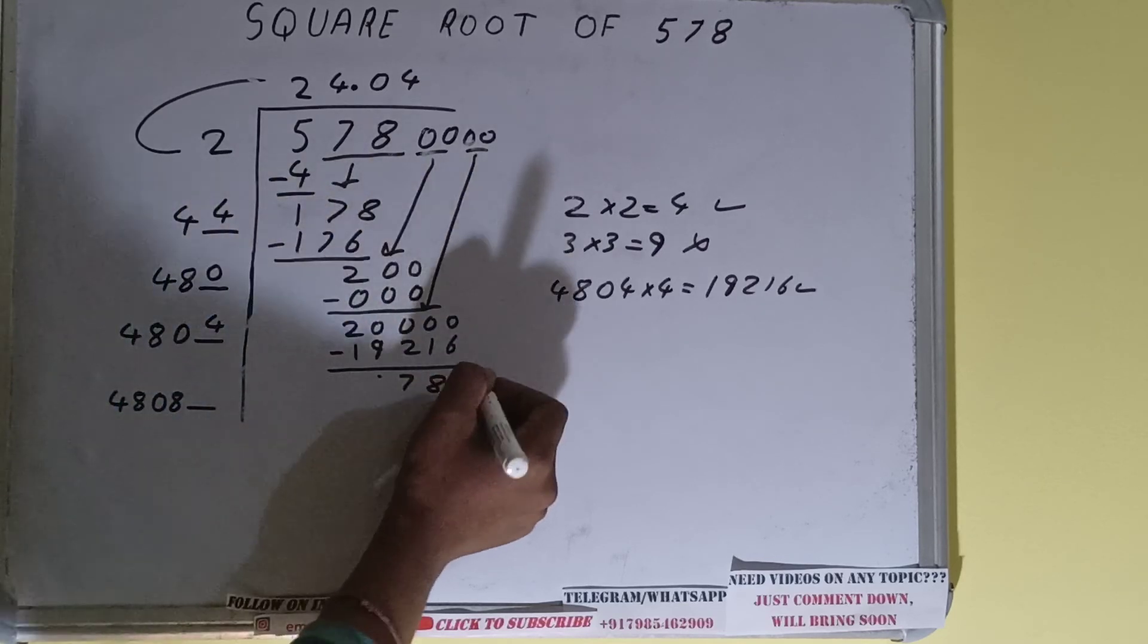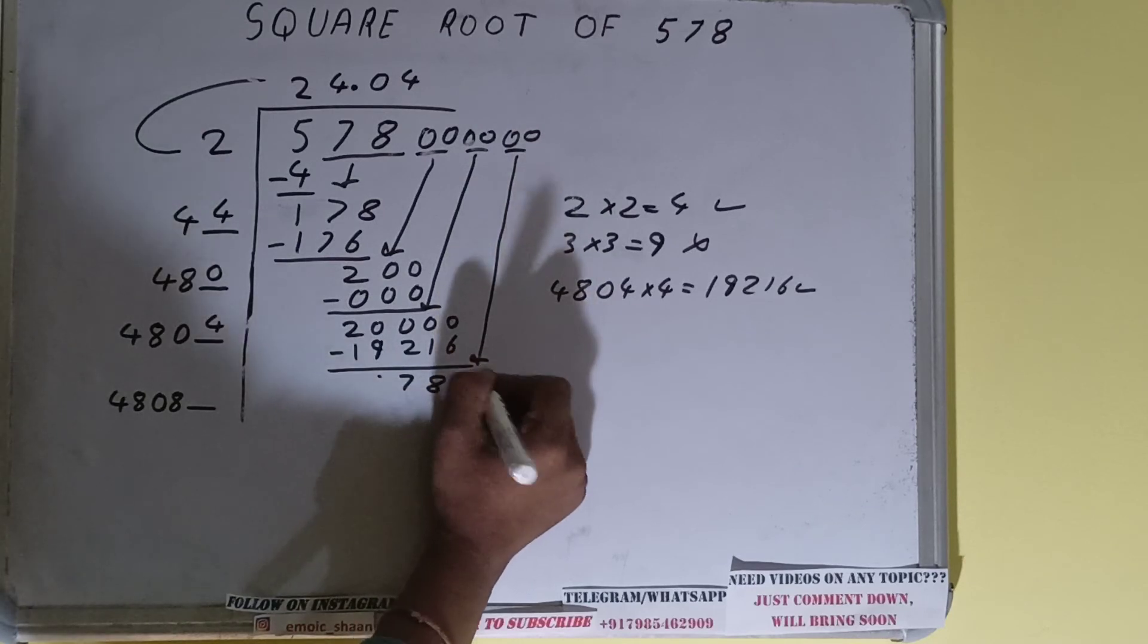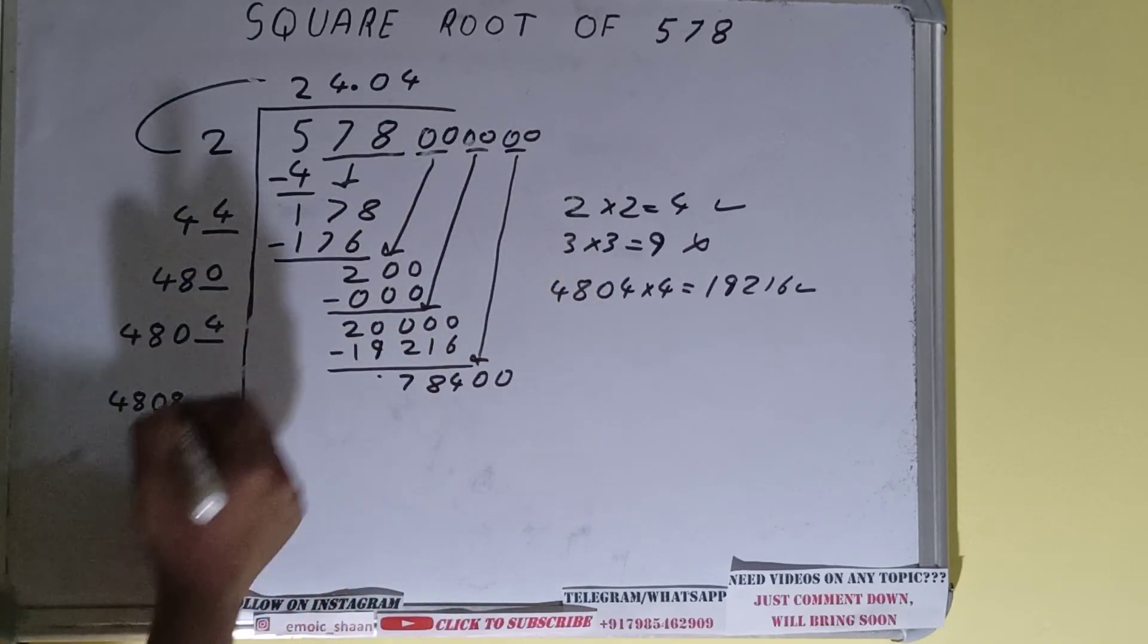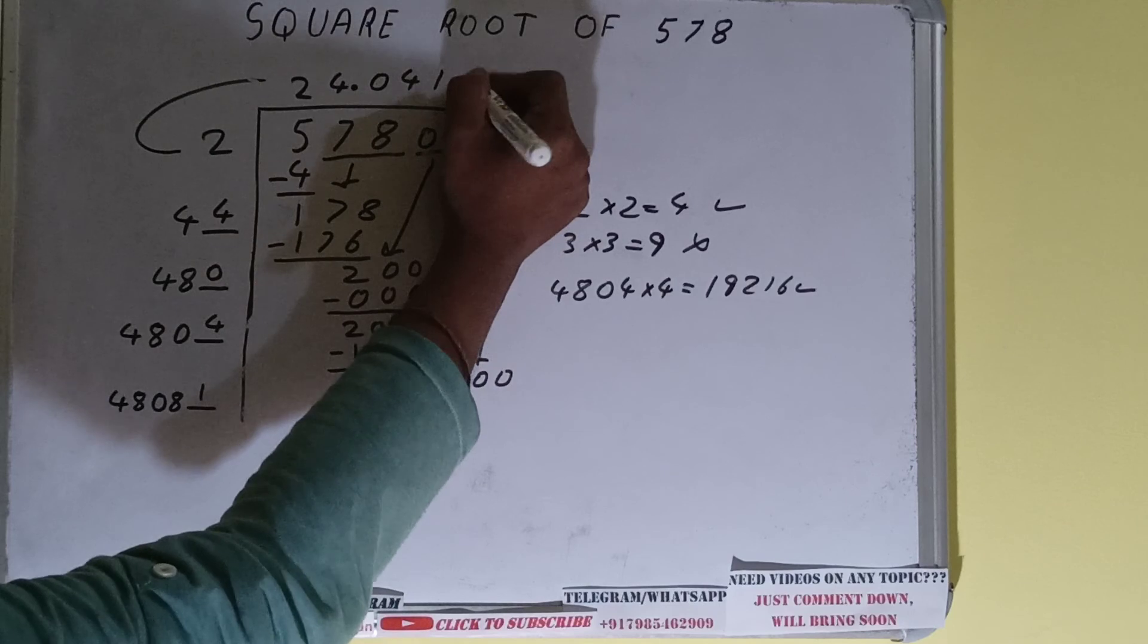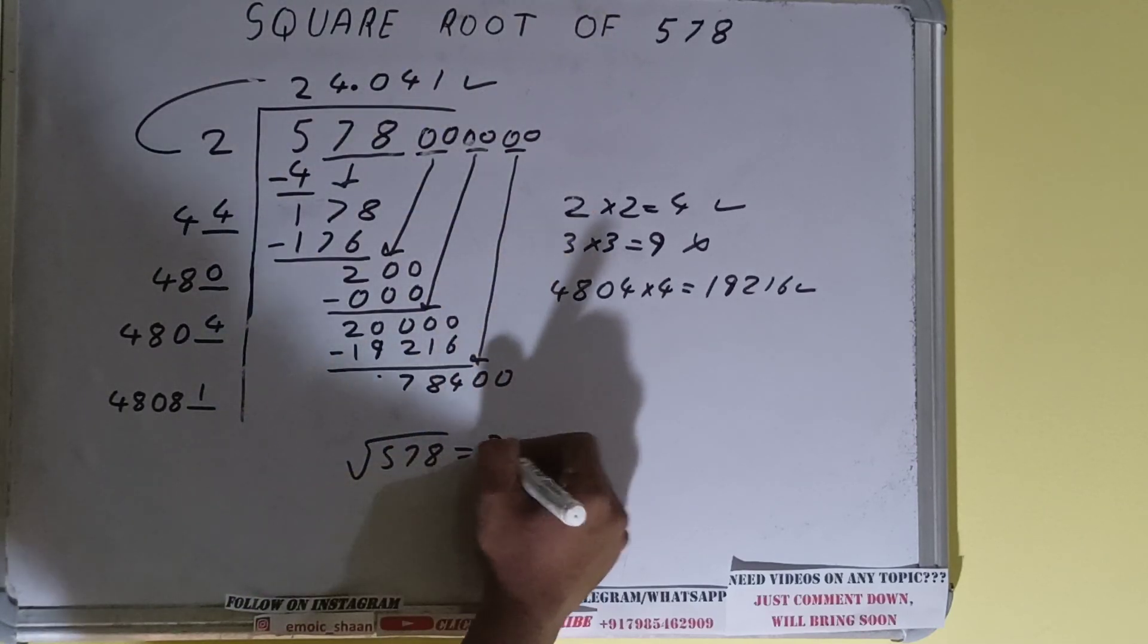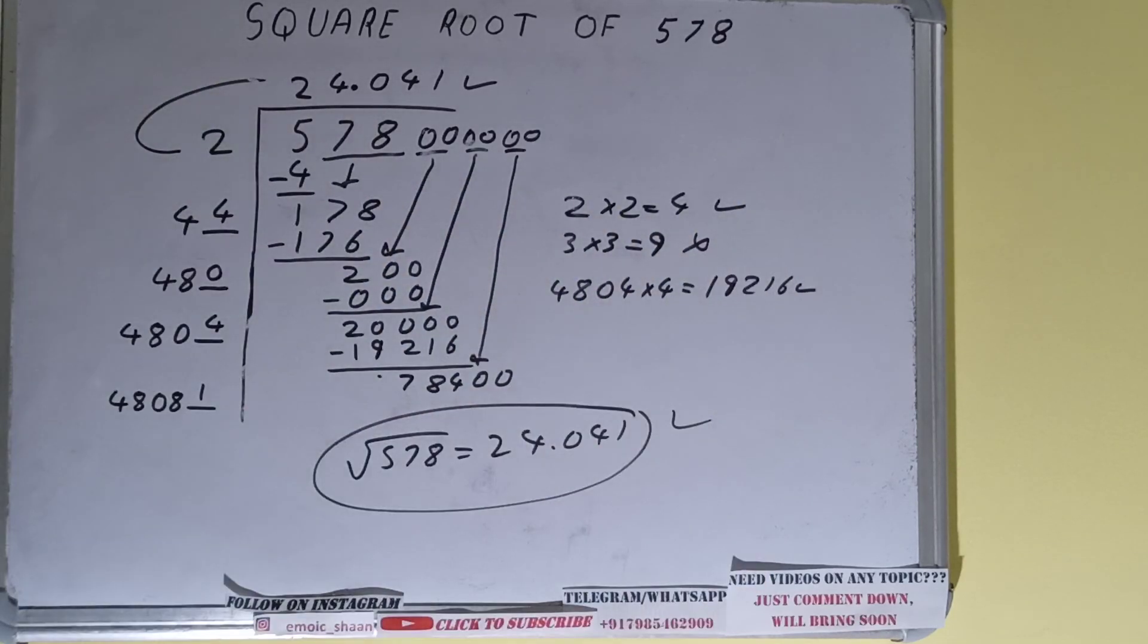And this number we need to make it big, so bring the next pair of zeros down and it will become as 78,400. So we can try one time, one here and one here. But we don't need to calculate because we got the answer correct up to three decimal places. So square root of 578 will be 24.041 and that would be the answer.